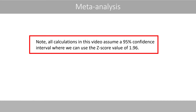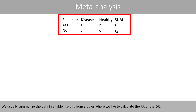All calculations in this video assume a 95% confidence interval, where we can use the z-score value of 1.96. We usually summarize the data in a table like this, from studies where we like to calculate the relative risk or the odds ratio.